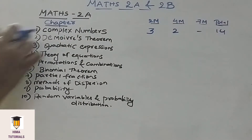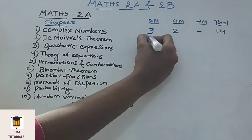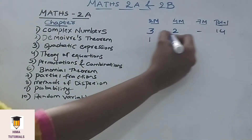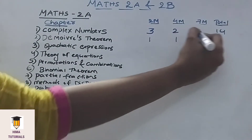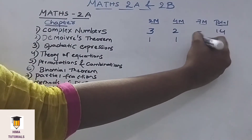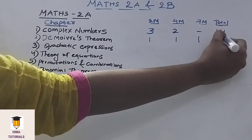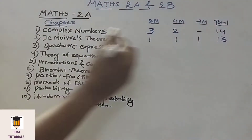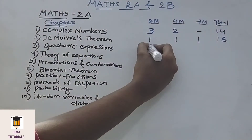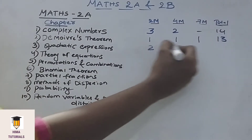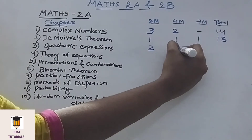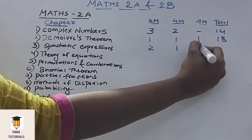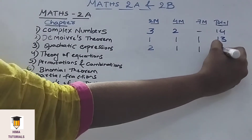Coming to De Moivre's Theorem, we get 1 two-mark, 1 four-mark, and 1 seven-mark question. In Quadratic Expressions, we get 2 two-mark questions, 1 four-mark, and 1 seven-mark.